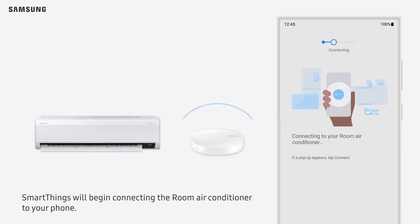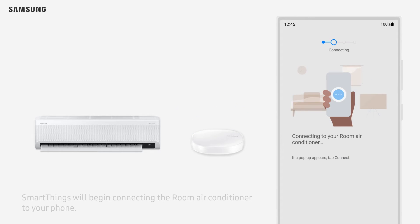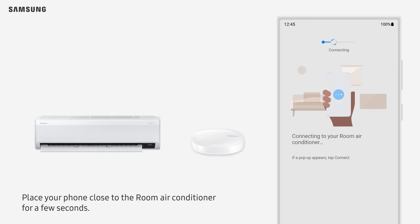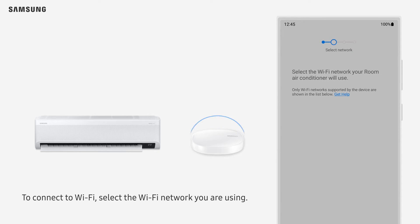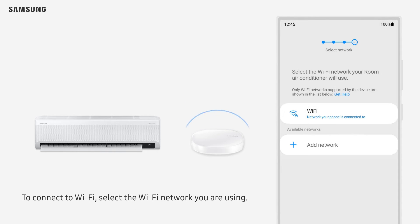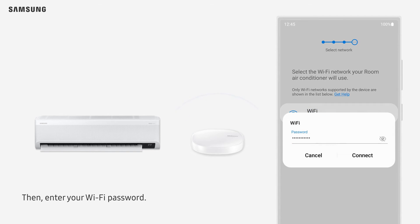SmartThings will begin connecting the room air conditioner to your phone. Place your phone close to the room air conditioner for a few seconds. To connect to Wi-Fi, select the Wi-Fi network you are using, then enter your Wi-Fi password.